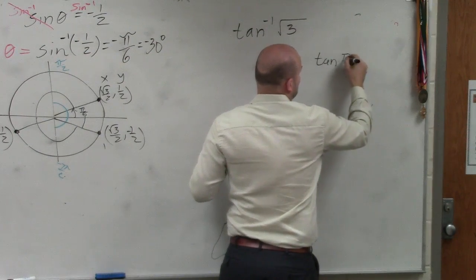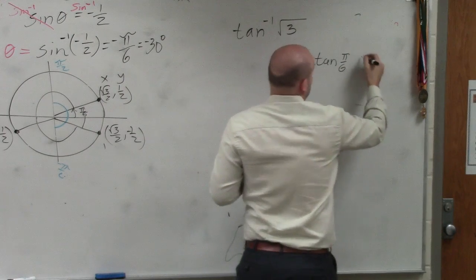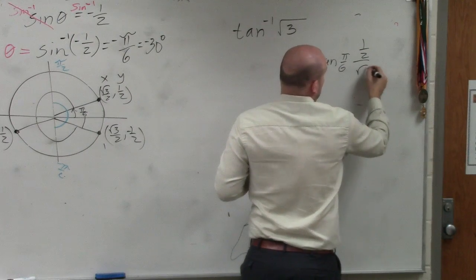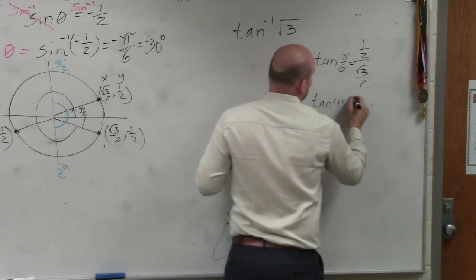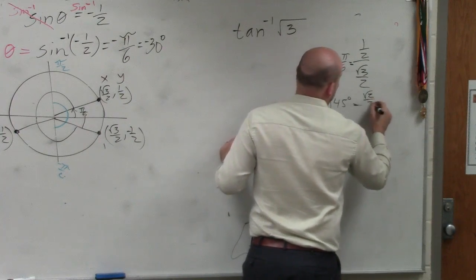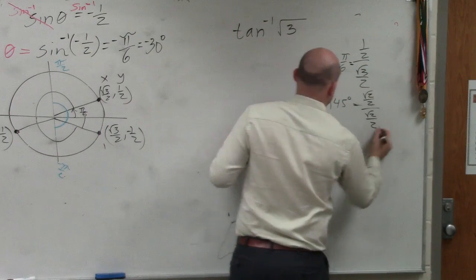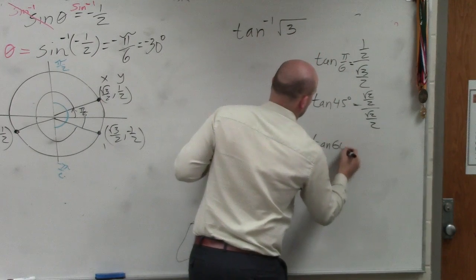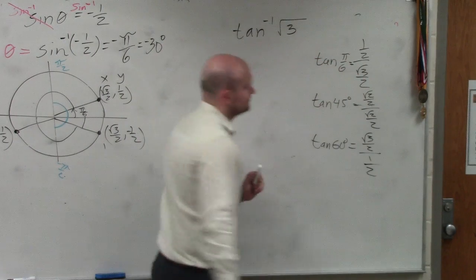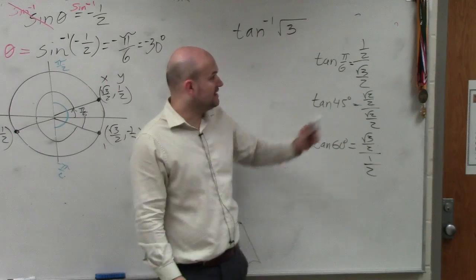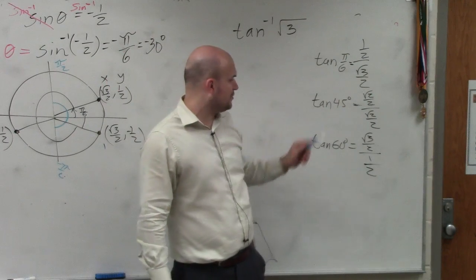So let's do this. Tangent of pi over 6. That is 1 half over square root of 3 over 2. Tangent of 45 degrees is square root of 2 over 2 divided by square root of 2 over 2. And then we have the tangent of 60 degrees, which is square root of 3 over 2 divided by 1 half. All I did was take the y-coordinate over the x-coordinate.